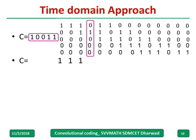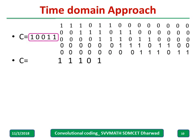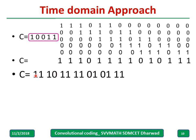Similarly for the fourth column: the second bit is 1, 0 into 1, all remaining are 0, so 0 into 1 plus 0 gives 0. Pause and do the remaining yourself, then cross-verify. The answer for this position is 1, and continuing similarly you get: 1 1 1 0 1 0 1 0 1 1. That is the codeword.